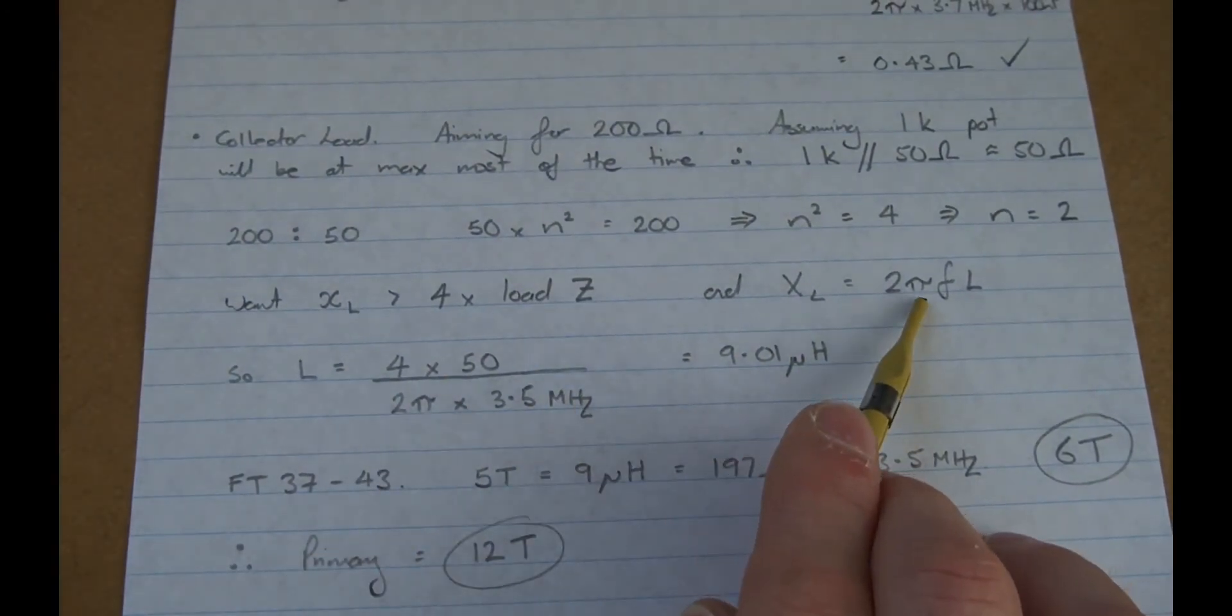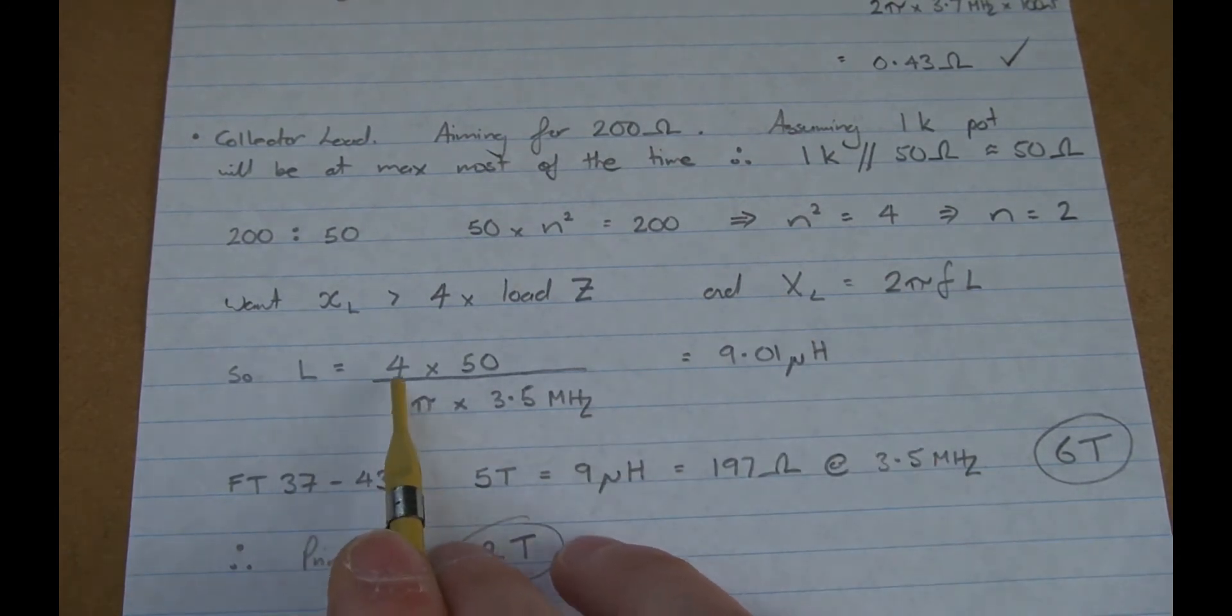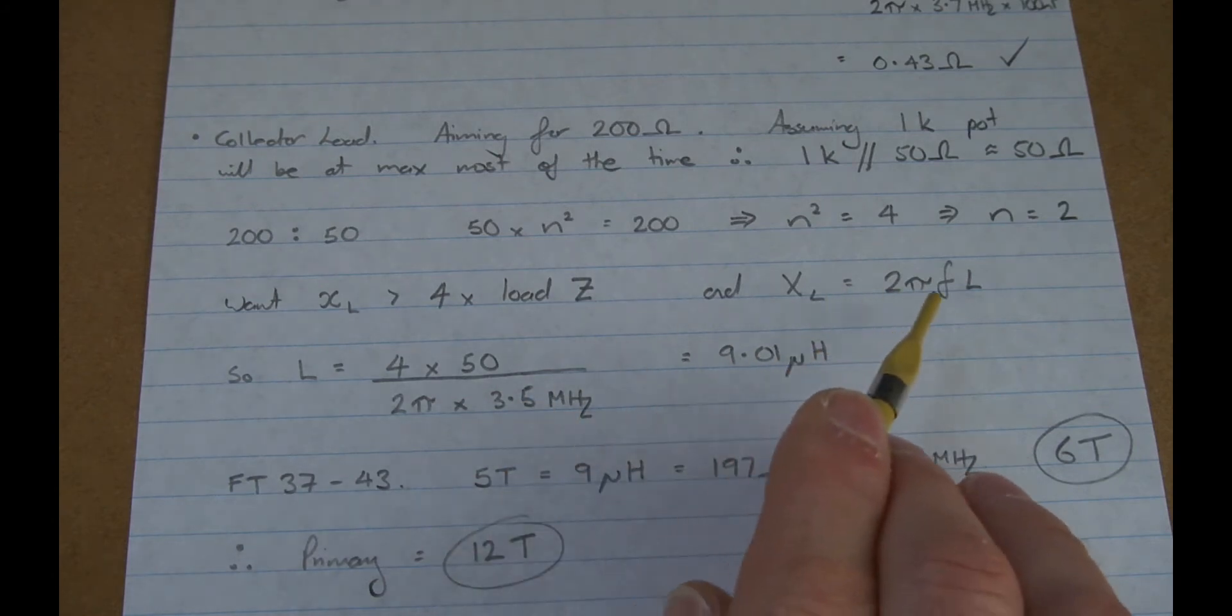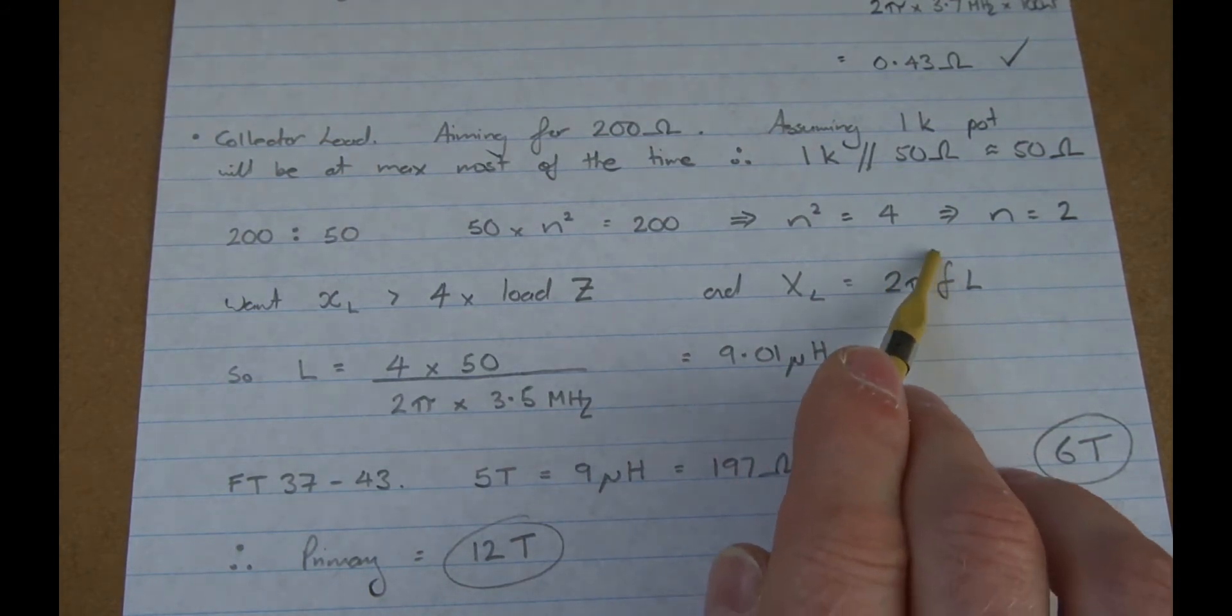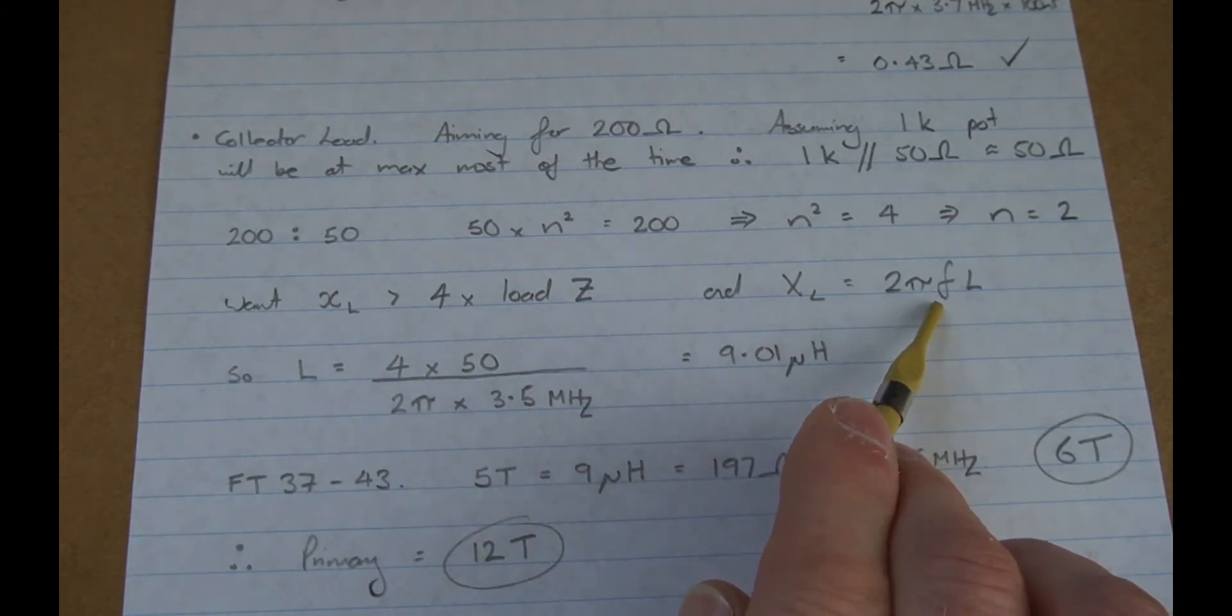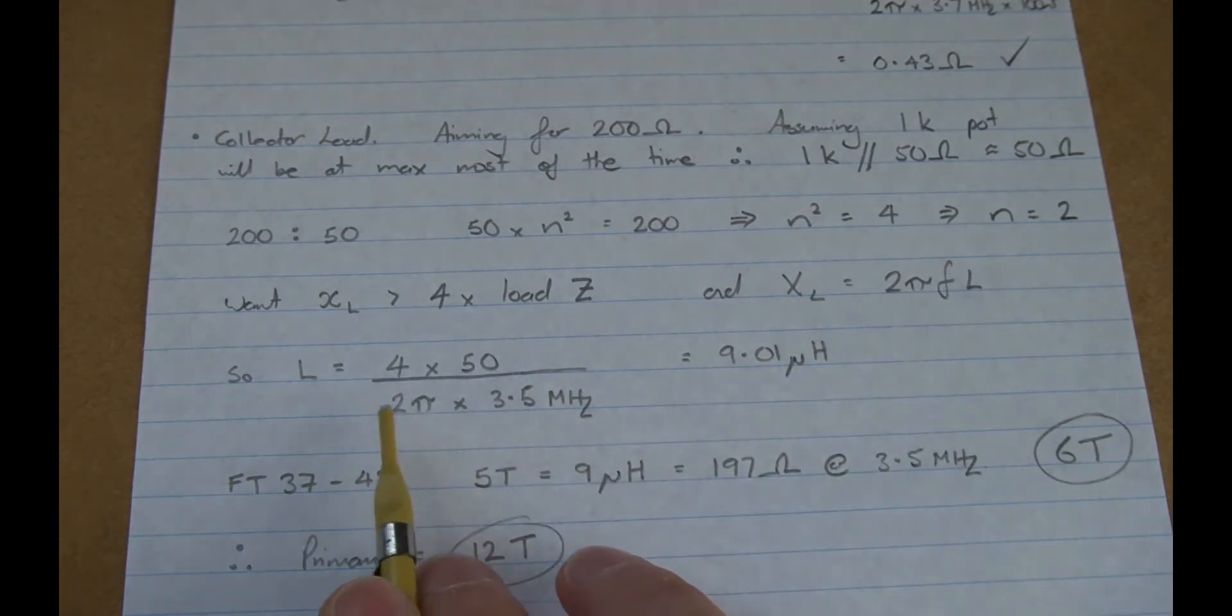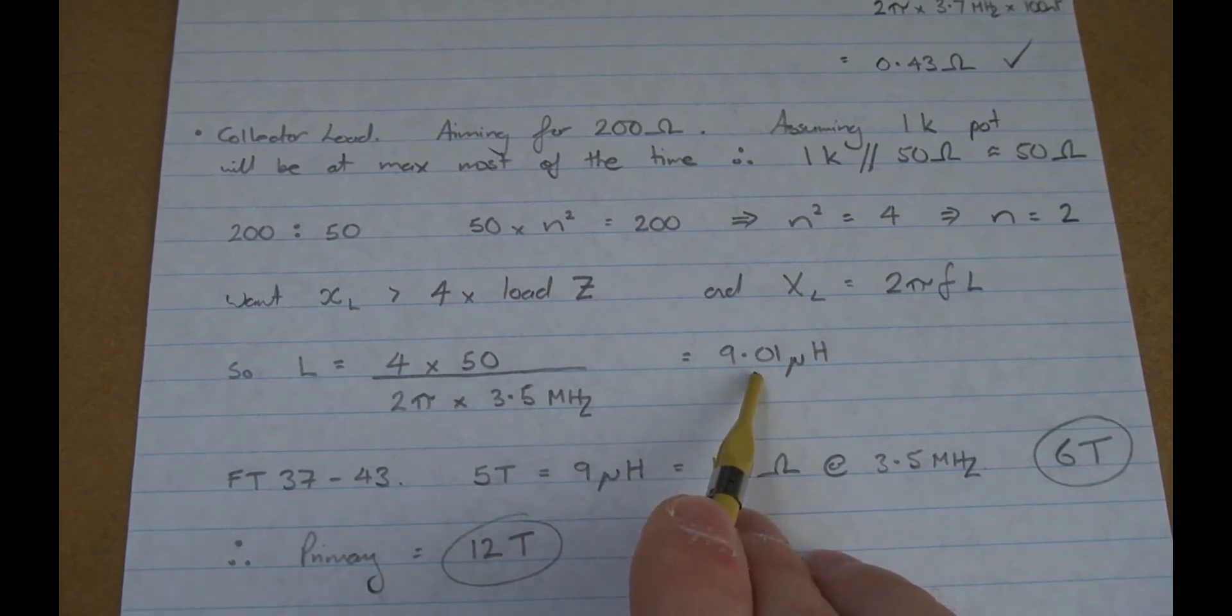So we can solve for that. So if we rearrange this equation here and make inductance the subject, we can say that 4 times 50 divided by 2 pi, 3.5 megahertz. Now, remember that we want this to be true for the lowest frequency. As we go higher in frequency, because it's on the top half, as that goes higher, that goes higher, which makes this better. So we want to work this out at the lowest frequency. So once again, make L the subject, solve for L using 3.5 megahertz, gives us an L of essentially 9 microhenries.